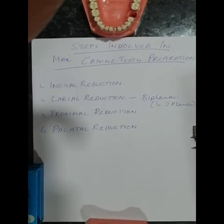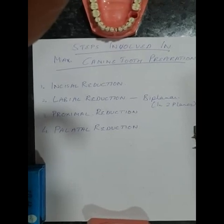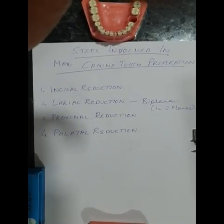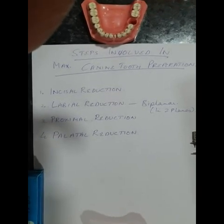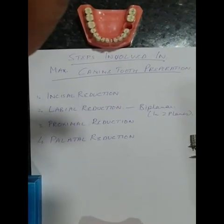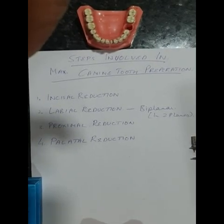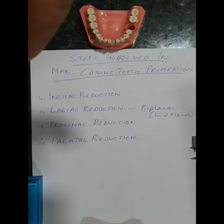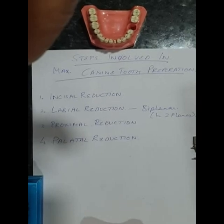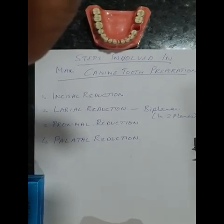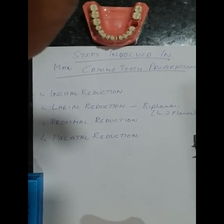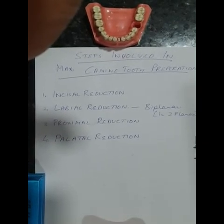With the help of a round end taper or torpedo bur, we first move the bur in the cingulum area. Once the cingulum area and the margins on the palatal side are complete, we focus on the lingual slope which lies above the cingulum of the canine. That area is then reduced with the help of a flame-shaped bur. The curvature of the flame-shaped bur is placed on the lingual slope and we ensure a reduction that can accommodate the crown material, but not so deep as to compromise the strength of the canine.